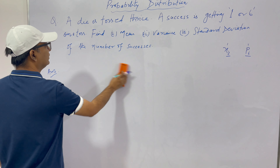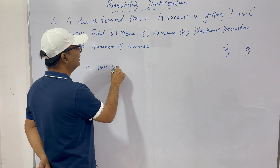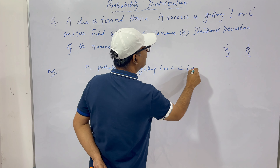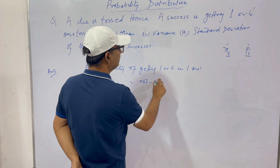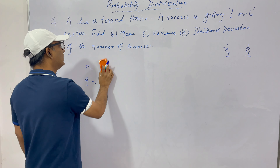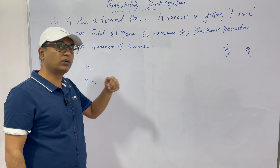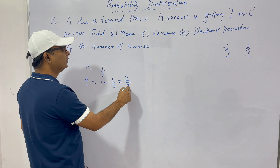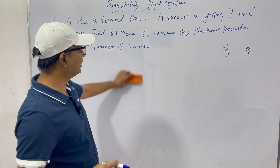Let's apply it. p is the probability of getting one or six in one trial. q is the probability of not getting one or six in one trial. Getting one is 1/6 and getting six is again 1/6, so getting one or six is 2 out of 6 — the probability p = 1/3. Therefore q = 1 − 1/3 = 2/3. So we have p = 1/3 and q = 2/3.